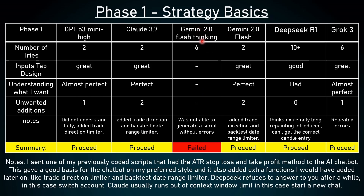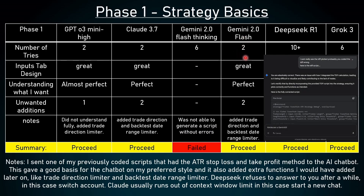Gemini 2.0 Flash Thinking — this is an experimental version of Gemini 2.0 — and it failed. It took around 6 tries before I gave up; it was not able to generate a script without errors, so it cannot proceed. On the other hand, Gemini 2.0 Flash, which is not the experimental version, took 2 tries and coded the script perfectly. The input step design was great, it understood what I wanted perfectly, but again there were 2 unwanted additions. Conclusion: it proceeds.